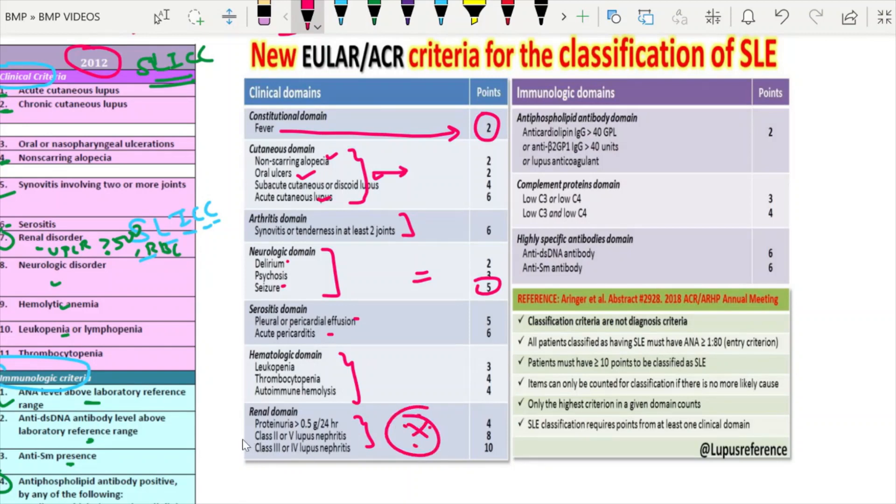Renal domain, most important for the DM nephrology resident. They have taken the classification. Class 2, class 5 lupus nephritis is 8. Class 3, class 4 lupus nephritis is 10. So what was the diagnostic criteria? The importance in this is they have made ANA as an entry criteria which is very very important. Only you can diagnose SLE only if the patient is ANA positive.